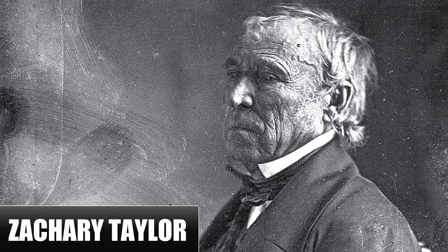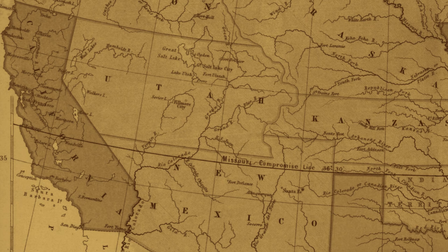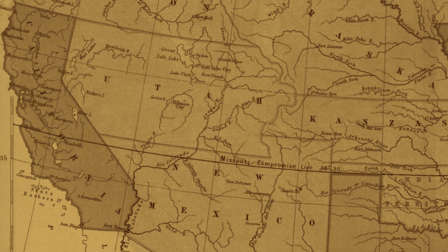The newly elected president, Zachary Taylor, pushed leaders in California and New Mexico to quickly apply for statehood. He believed that the people of each state would definitively decide the issue of slavery for themselves. Since California prohibited slavery, the admittance of California as a state would unbalance the power in Congress.